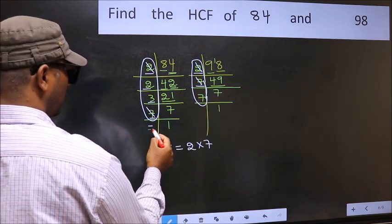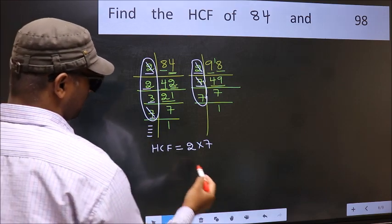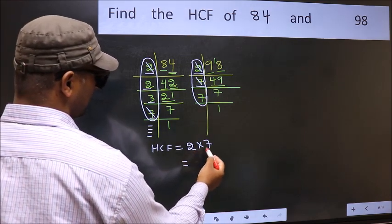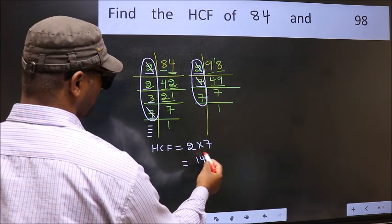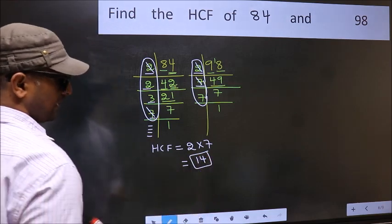No more numbers have been left out. So our HCF is 2 times 7, 14 is our HCF.